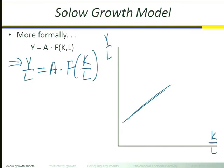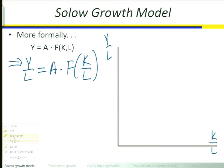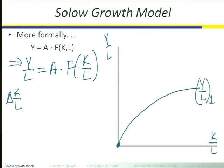That tells me the graph increases at a decreasing rate. We know that if there is no capital per worker, we get no output, so it anchors at the origin. It increases at a decreasing rate — I'll call that Y over L (1), my first example. This graph is called the aggregate production function. If there is a change in the amount of capital per worker, K over L, we move along that line. If it's measured on one of the axes and it changes, we move along the graph. If it's not measured on one of the axes and it changes, the whole thing shifts.